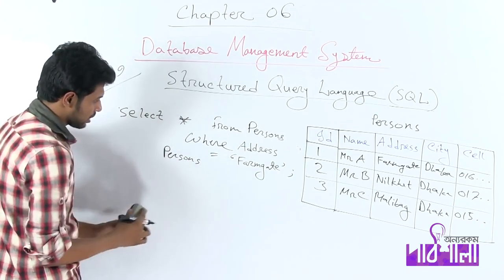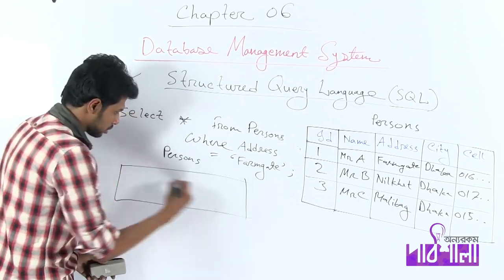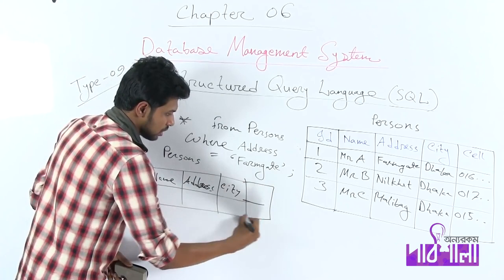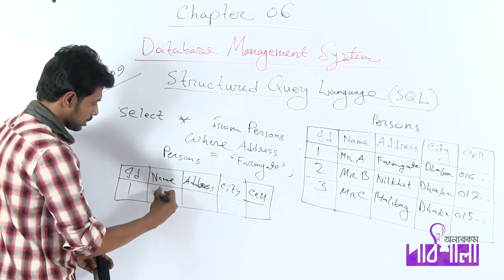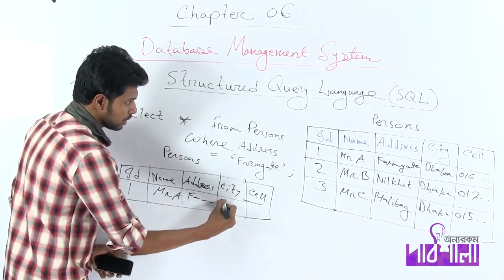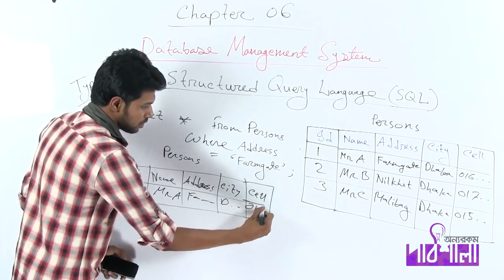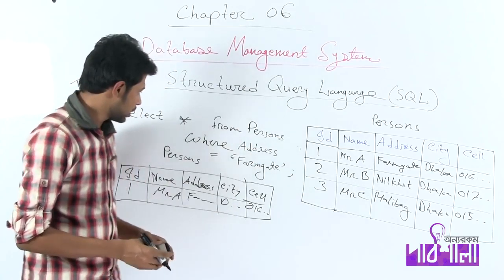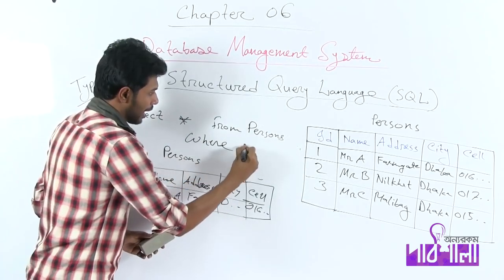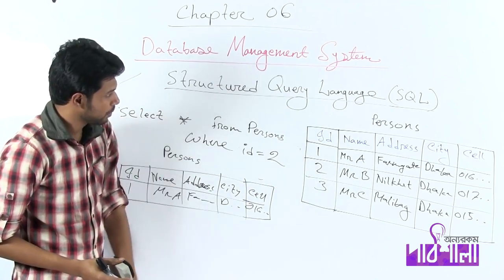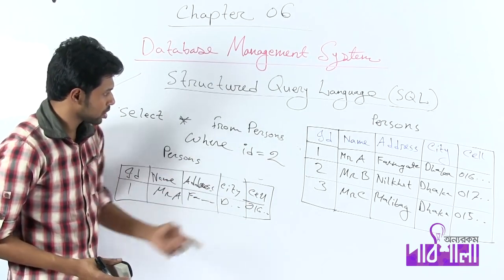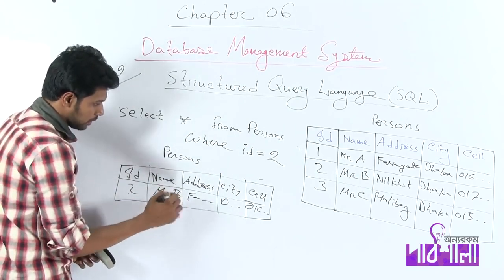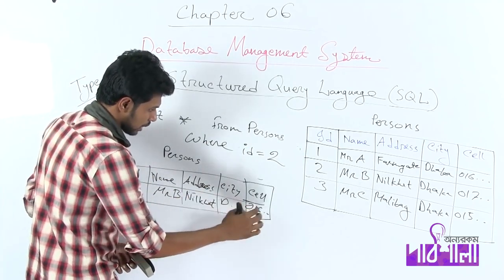Okay, let's check it out. Farmgate is here. Let's take a record — ID, name, address, city, cell. Farmgate is here: ID 1, name Mr. A, city, cell 016. If you want to know ID equals 2, the information is here. WHERE ID equals 2. If you had an integer type or number type, you don't use a quotation. If you want to know ID 2 — Mr. B, city, cell.